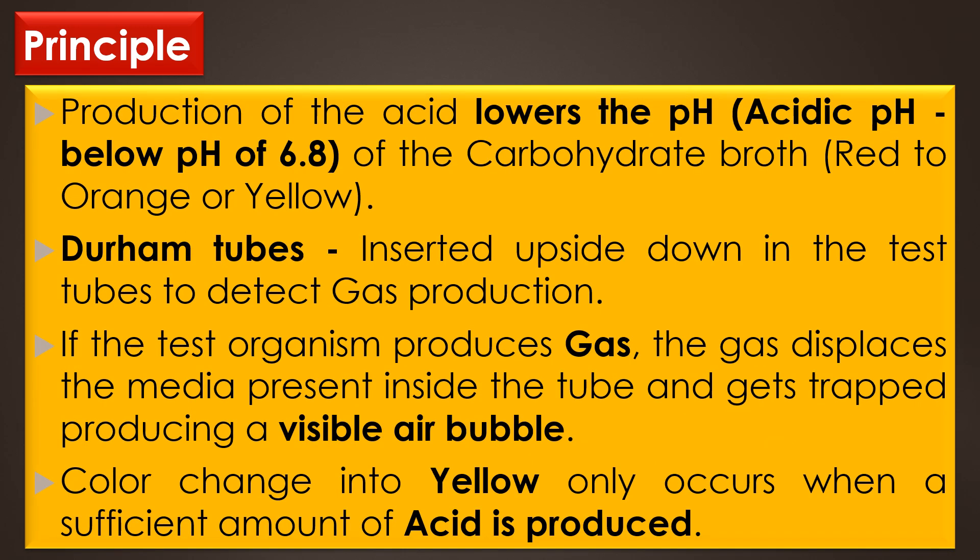As a result of carbohydrate fermentation, various organic acids are produced. The production of acids lowers the pH to acidic pH — that is, below 6.8 — of the test carbohydrate broth, which is detected by the color change from red to orange or yellow because of the pH indicator. Durham's tubes are inserted upside down in the test tube to detect gas production. If the test organism produces gas, it displaces the media inside the tube and gets trapped, producing a visible air bubble.